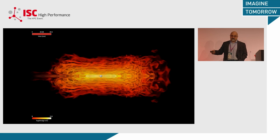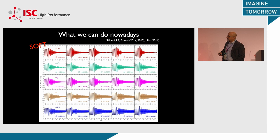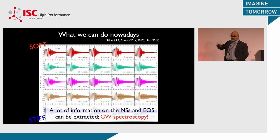We can now produce many different waveforms with different equations of state — different colors represent different equations of state, different columns represent different masses of the system. Because we don't know the equation of state, we have to model all possibilities: soft equations of state and stiff equations of state. To produce this colorful plot, we used about one year of computing time on SuperMUC in Munich — just to give you an idea of how expensive these calculations are. We can easily correlate the properties of the gravitational wave signal with the properties of the neutron stars.